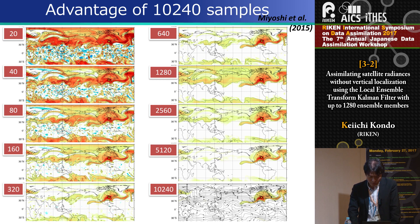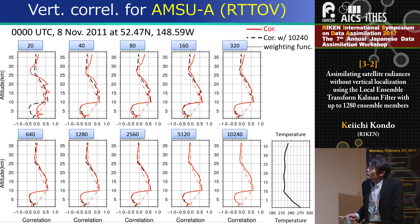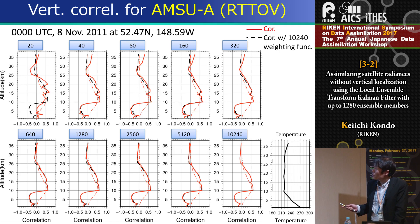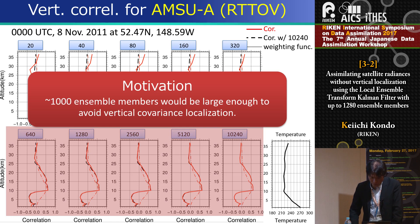This shows the vertical correlation for AMSU-A from ensemble sizes of 20 to 10,000. The red line shows the correlation structure without localization, and the black dashed line shows the correlation of the 10,000-member run. The difference between the black line and the red line indicates sampling errors. Roughly 1,000 members would be large enough to avoid the need for vertical covariance localization.